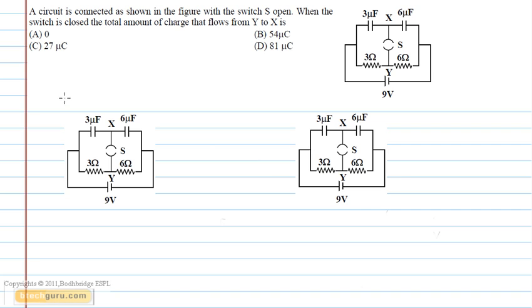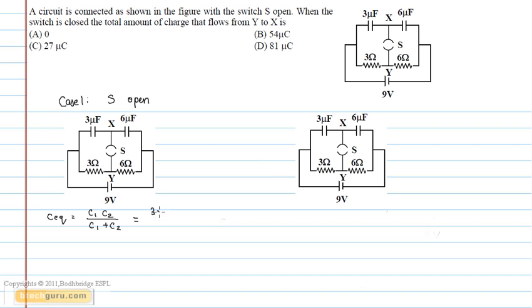Now let us have a look at Case 1 when the switch S is open. In this case, both the capacitors are connected in series. So C equivalent is given by C1 into C2 upon C1 plus C2, which is equal to 3 into 6 upon 3 plus 6, which equals 2 microfarads.